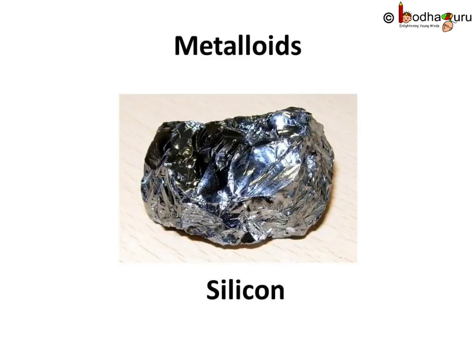A few elements have properties between those of metals and nonmetals. They are called metalloids. For example, boron, silicon, germanium, etc. These are metalloids.